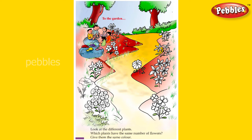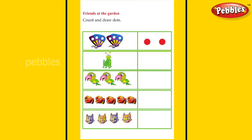How many flowers are in the first plant? There are two flowers. Look at the other side — can you see two flowers? Give the same color to the two flowers. Then the next picture has four flowers; look at the other side and give the same color. Then three flowers, one flower, five flowers — all finish.